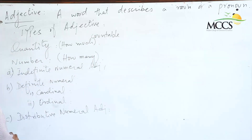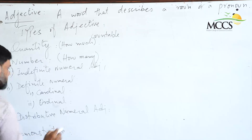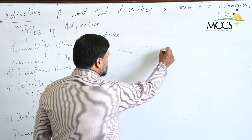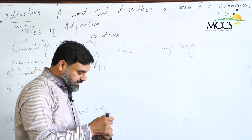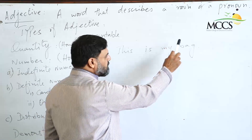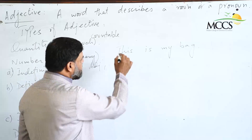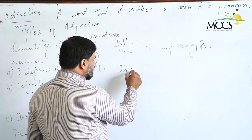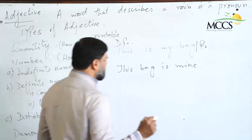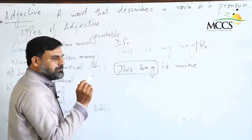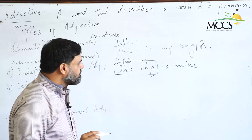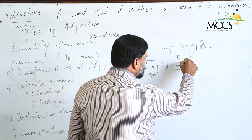The fourth type of adjective is called demonstrative adjectives. If you remember when we discussed pronouns, we had 'this is my bag' — that was a demonstrative pronoun case. But if we write 'this bag is mine,' the word 'this' is now attached alongside its noun. That makes it a demonstrative adjective. And the word 'mine' in that sentence would be the possessive pronoun case.